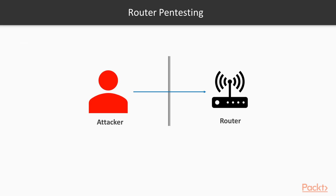Let me show you the process — it's quite simple. In pentesting, we consider ourselves as an attacker trying to get information about the router. This is your router; it has different kinds of services like SSH and SNMP running inside it. The work of the attacker is to get information about all the services running inside this router, and then try to log in to these services and perform a brute force attack on them.